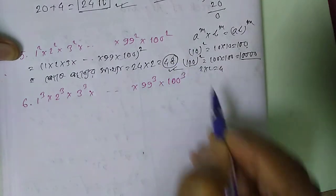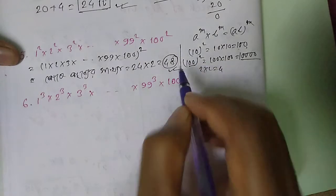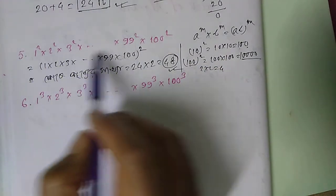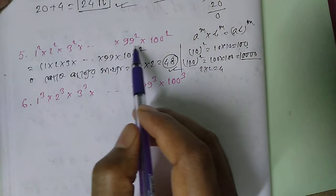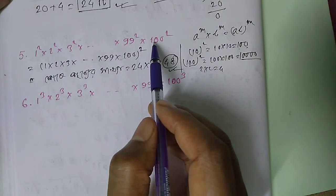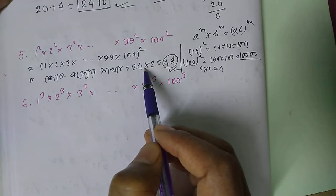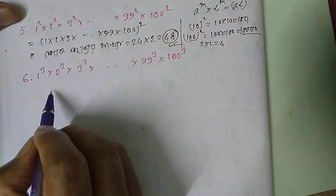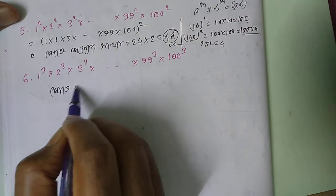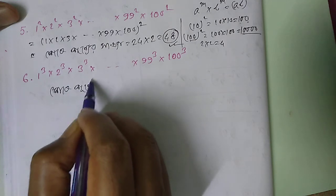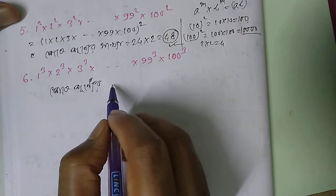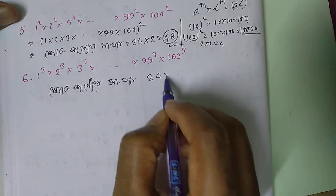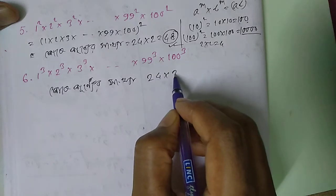We have to multiply 25 into 2. We will make it 1×2×3 times. We will make it the last stage. Once we have the power, we will make it the same. The second stage is — let's see 29 times, 3 times.